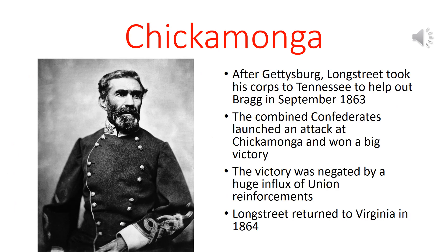After Jefferson Davis gave command of the Army of Tennessee to Braxton Bragg instead of the more talented Beauregard, the Confederates had been pushed out of Tennessee except for the southeastern corner. After Gettysburg, Longstreet's Corps was sent to Tennessee to bolster Bragg in September 1863. Their combined force launched a counterattack at Chickamauga — a big victory and Bragg's only win. However, this was immediately negated by huge Union reinforcements, so the Confederacy gained only the town of Chickamauga and a couple of small mountains. Longstreet returned to Virginia in 1864 several thousand men fewer due to casualties at Chickamauga and its aftermath.